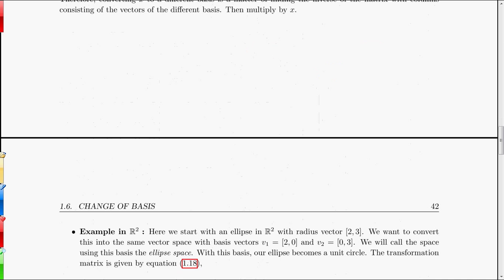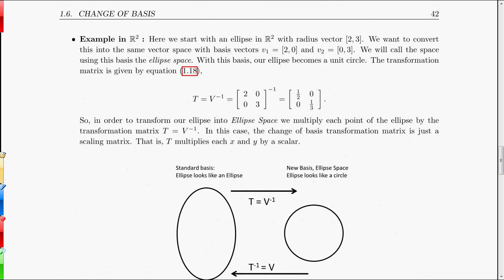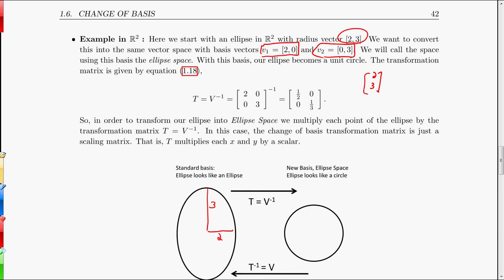I'll give a little example. Suppose I have an ellipse in R2 with radius vector 2, 3 — that means I have this ellipse here. Suppose I want to convert that to a unit circle. My new basis will be V1 = (2, 0) and V2 = (0, 3), because the radius vector (2, 3) equals 1·(2,0) + 1·(0,3). So the radius vector with respect to my new basis is just 1, 1 — that is a unit circle. To get the transformation matrix, I take those two basis vectors, form matrix V, get its inverse — there's my transformation matrix.